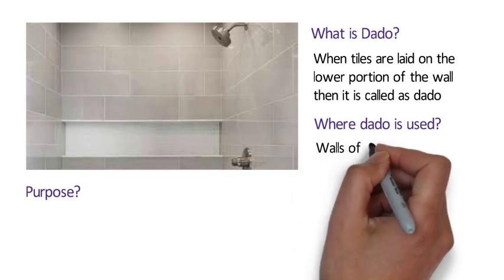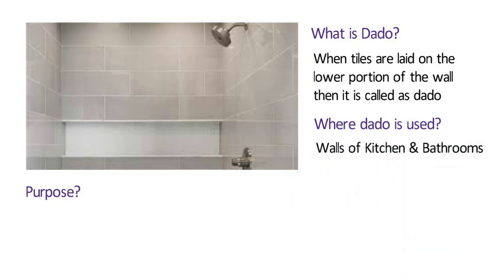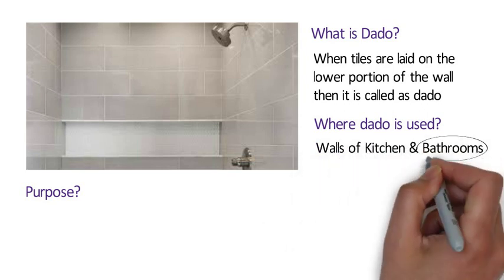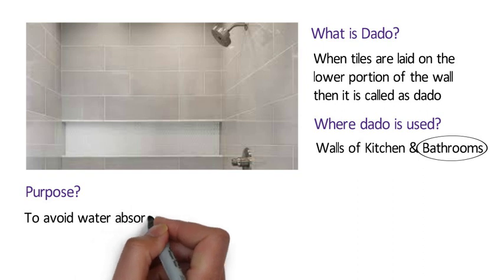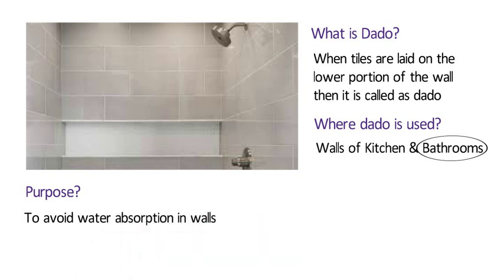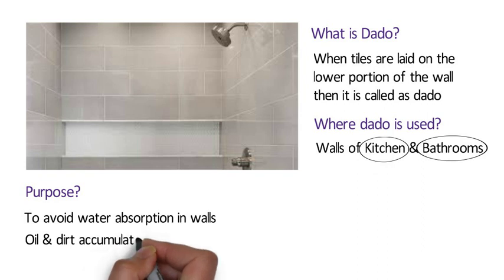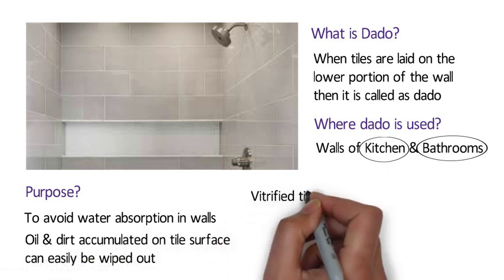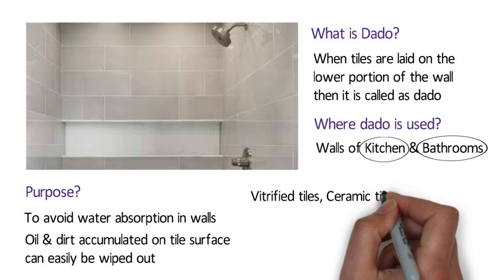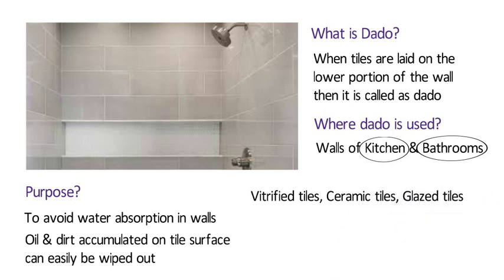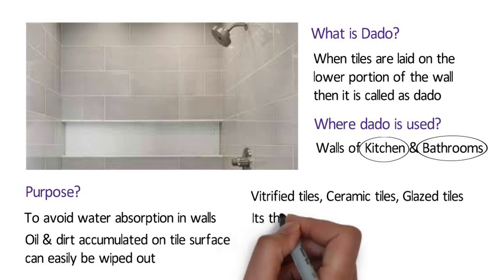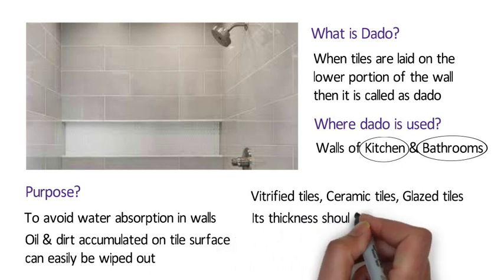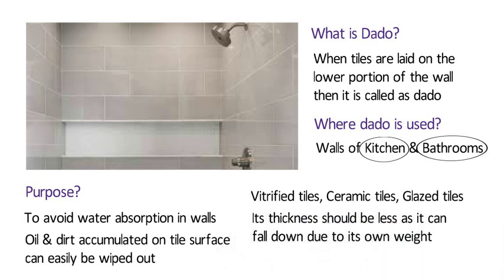Dado is mainly provided in walls of kitchens and bathrooms. It is provided in bathrooms to avoid water absorption in walls, and in the kitchen so that oil and dirt accumulated on the tile surface can easily be wiped out. Vitrified tiles, ceramic tiles, and glazed tiles are commonly used as dado wall tiles. While selecting tiles for dado, its thickness should be less, as it can fall down due to its own weight.